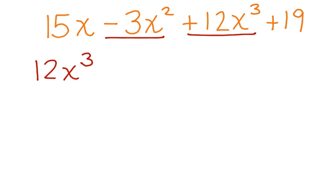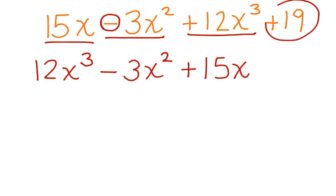Now our next term has this subtraction, or you could think of it as a negative with it. Let's bring that down. We have a positive 15x. And then finally, we put our constant in. Now this polynomial is ordered correctly.